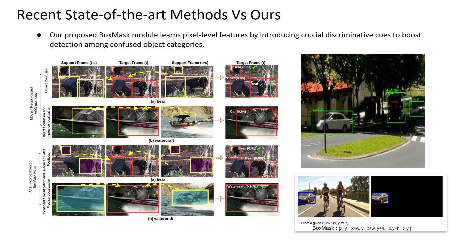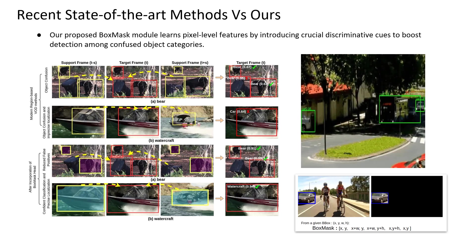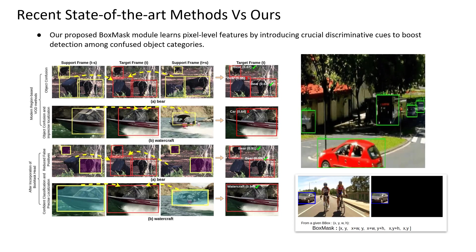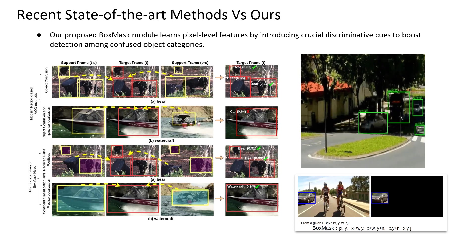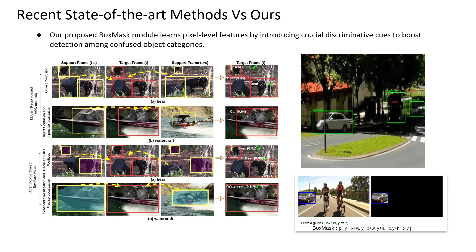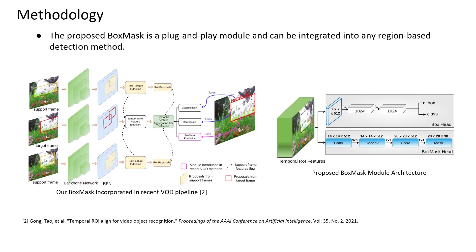To exploit pixel-level information, we simply create a bounding box mask tensor by labeling all the pixels inside the bounding box with a corresponding class label of an object. Here, on the left, we first show an architectural overview of a modern region-based video object detection pipeline equipped with our proposed module, highlighted in the magenta color.